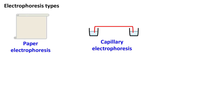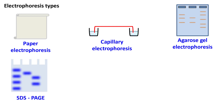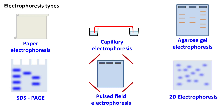Electrophoresis can be of several types such as paper electrophoresis, capillary electrophoresis, agarose gel electrophoresis, SDS-PAGE, pulsed field electrophoresis, and two-dimensional electrophoresis. Let's see each of them.